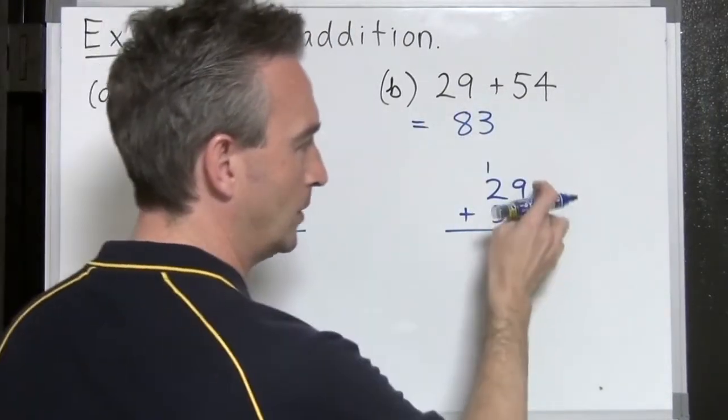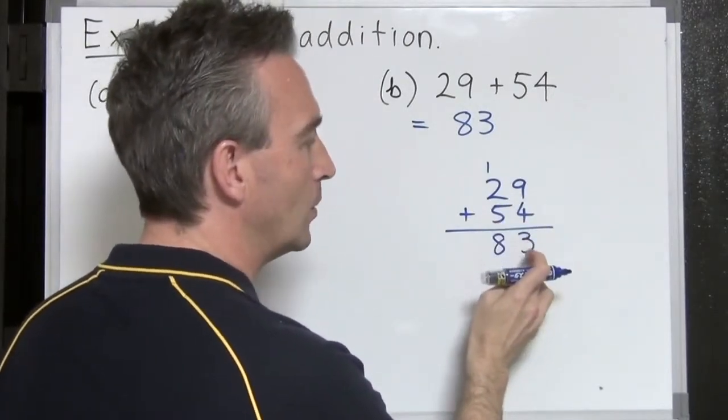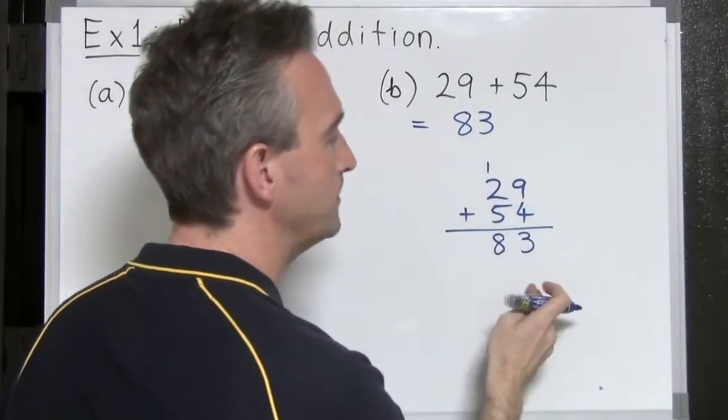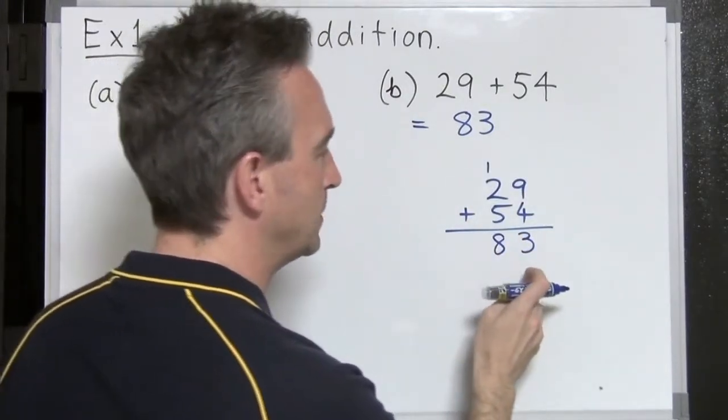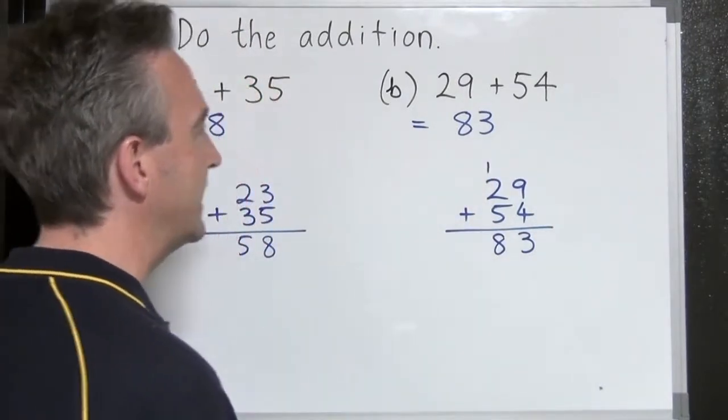So what actually happened here was, we got 13. The 3 belongs here. The 3 in the 13 is a single unit. But the 1 in 13 belongs with the tens. So it gets carried over. So we carried the 1. Answer of 83.